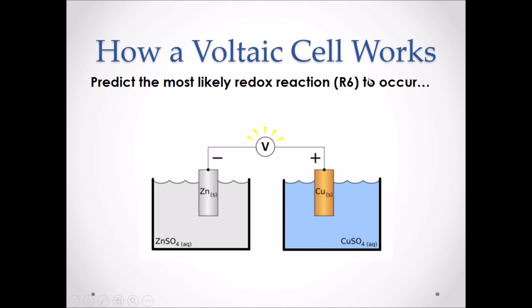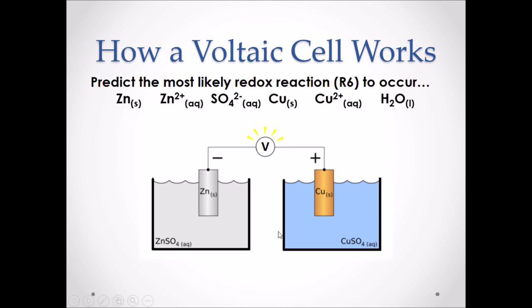How a Voltaic Cell Works. All voltaic cells use the same principles, which fall under lesson R6 in the redox reactions unit: predict the most likely redox reaction to occur by listing all of the species shown. If we list all of the species available to react, we have zinc solid at one electrode, and we also have the solution zinc sulfate, which we list as the ions Zn²⁺ and SO₄²⁻.